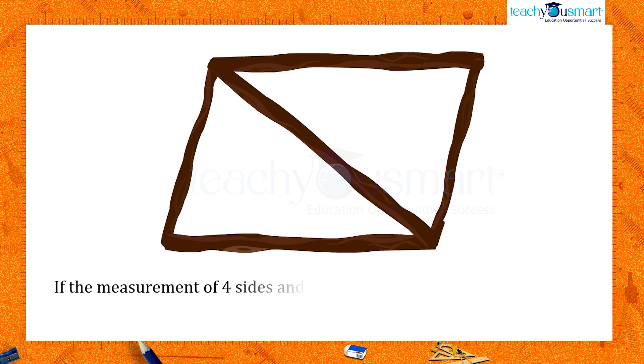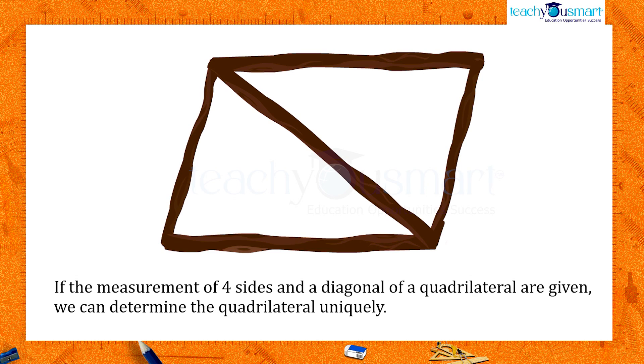That is, if the measurement of four sides and a diagonal of a quadrilateral are given, we can determine the quadrilateral uniquely.